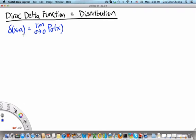So this is one way to think of the Dirac delta function. But of course, the limit of a family of functions need not be a function itself. In fact, it very frequently is a distribution.